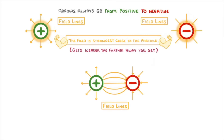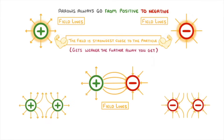If instead we had two particles of the same charge, for example two positive particles or two negative particles, then the two particles would repel each other, because like charges repel.